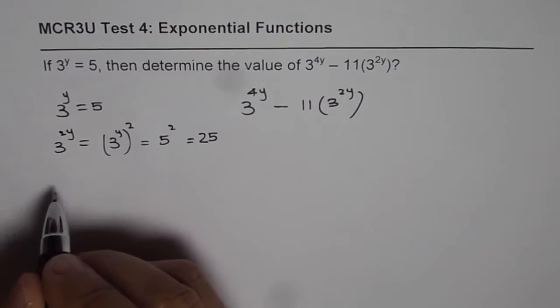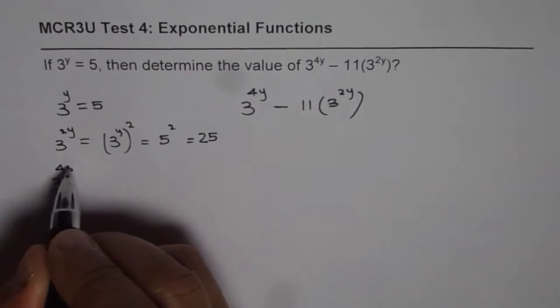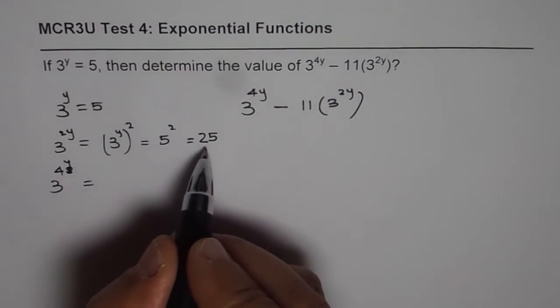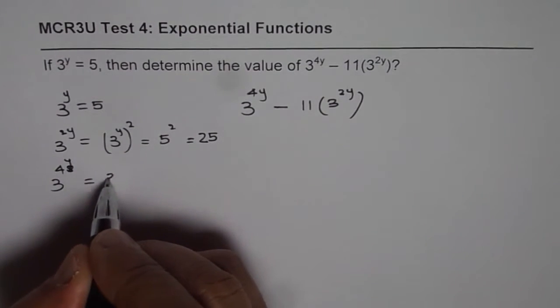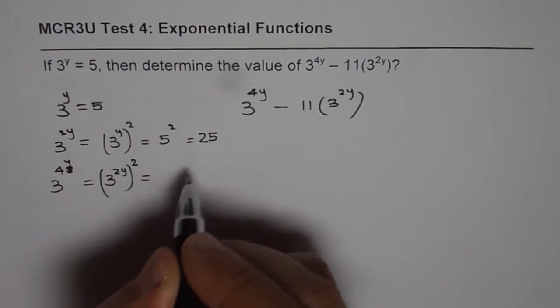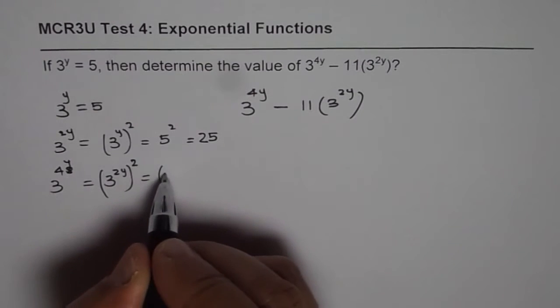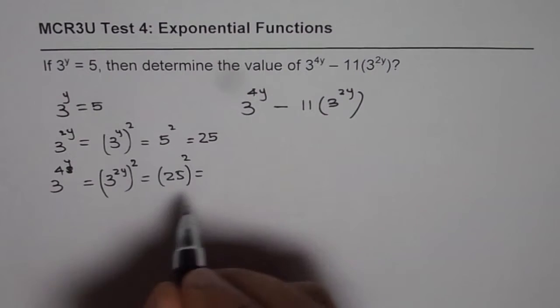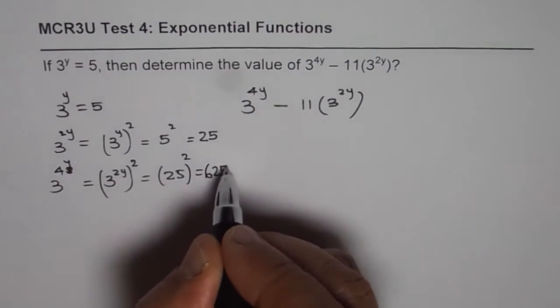How about 3 to the power of 4y? 3 to the power of 4y will be equal to square of this correct. So it could be written as 3 to the power of 2y whole square, which means 3 to the power 2y is 25, correct? Square of 25, which is 625, perfect.